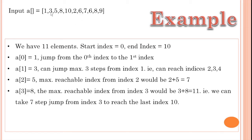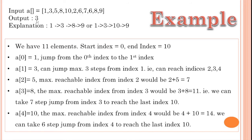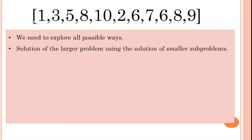Let's reach index 3, then we go to index 10 to achieve the last index. The output is 3. The answer path is through indices 1, 3, 8 or 1, 3, 10. So we need to explore all possible ways. When the solution for the larger problem is obtained by the solution of a smaller problem.